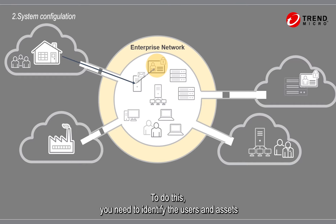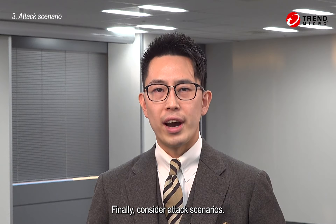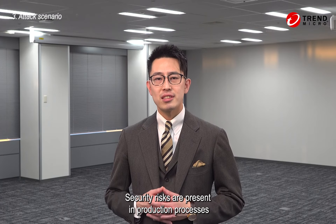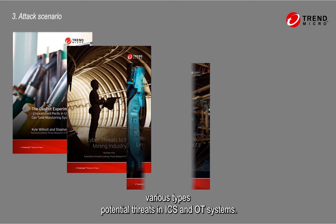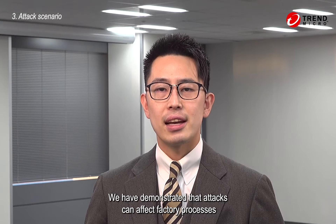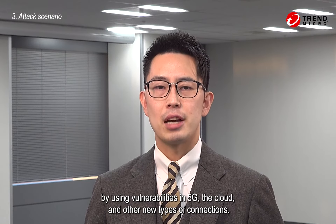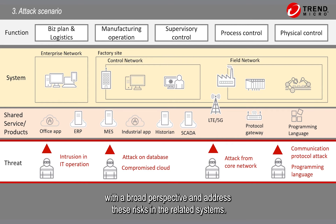To do this, you need to identify the users and assets to access the required permissions and the flow of data. Finally, consider attack scenarios. Security risks are present in production processes and the systems that support them. Trend Micro leverages its research to clarify various types of potential threats in ICS and OT systems. We have demonstrated that attacks can affect factory processes by using vulnerabilities in 5G, the cloud, and other types of connections. Instead of viewing individual assets or services as potential targets, you need to identify risks using attack scenarios with a broad perspective and address these risks in the related systems.